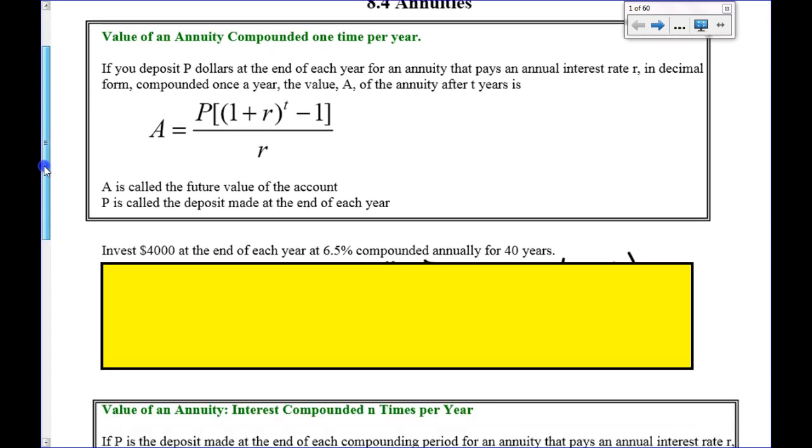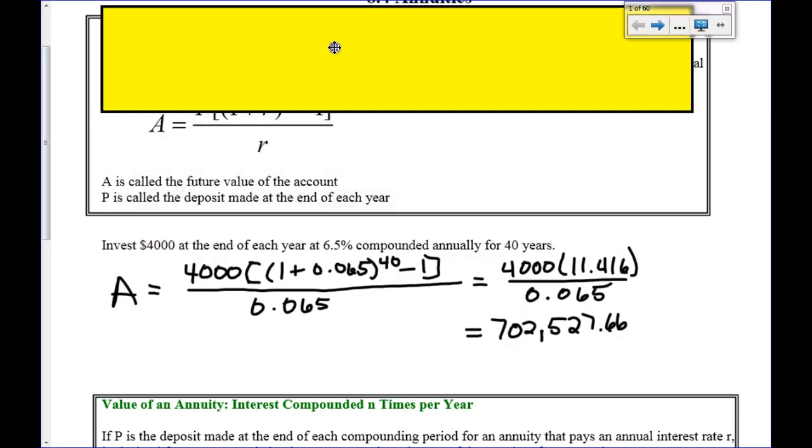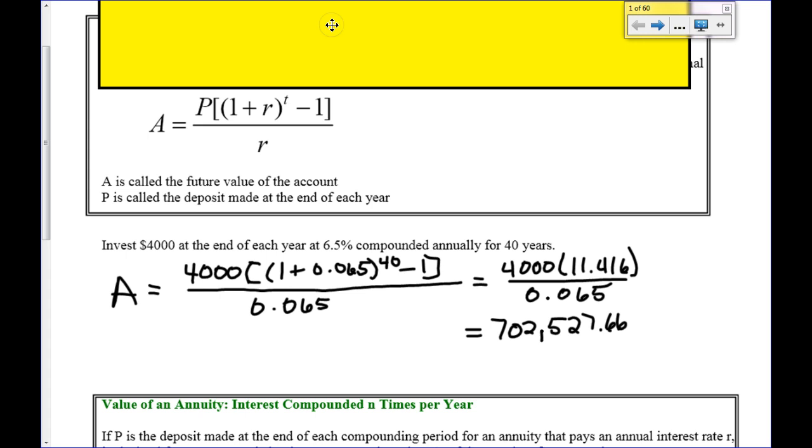So hopefully you guys got the same thing I did. Here's what I have. I put $4,000 in for P, bracket, and then I have 1 plus .065 to the 40th power minus 1, which if you put that into your calculator, it should be 11.416. And then divide it by .065. So, your payout after 40 years should be $702,527.66.